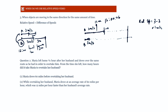B will cover 1 extra meter every second, so to close the 12-meter distance between them — with a relative speed of 1 meter per second — B will overtake A in 12 seconds. These are the usual cases in which relative speed is used. Always remember: use relative speed when both objects are moving for the same amount of time.